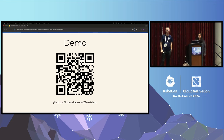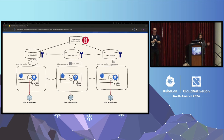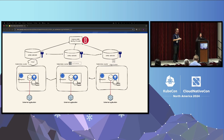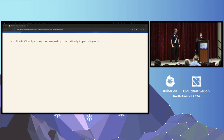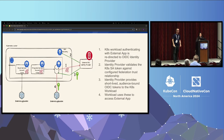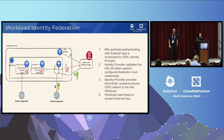Question about the relationship between the SPIRE server and the OIDC provider. Looking back at the workflow diagram: instead of Kubernetes service account tokens, think of SPIRE tokens. The SPIRE server has an OIDC integration and provides OIDC discovery. Instead of the Kubernetes service account issuer being the OIDC discovery endpoint, it is the SPIRE server's OIDC endpoint that you federate with the external application.